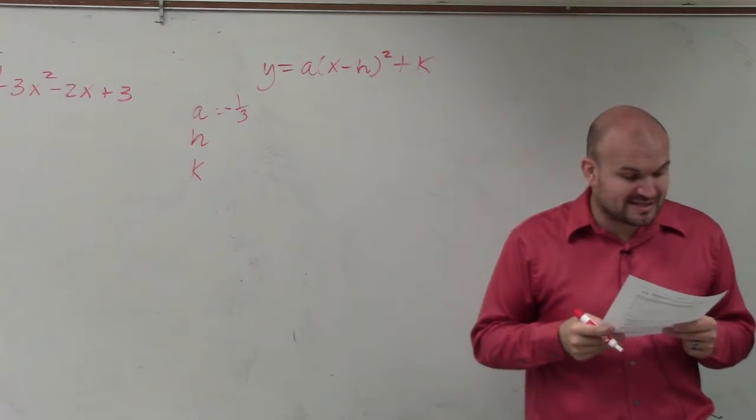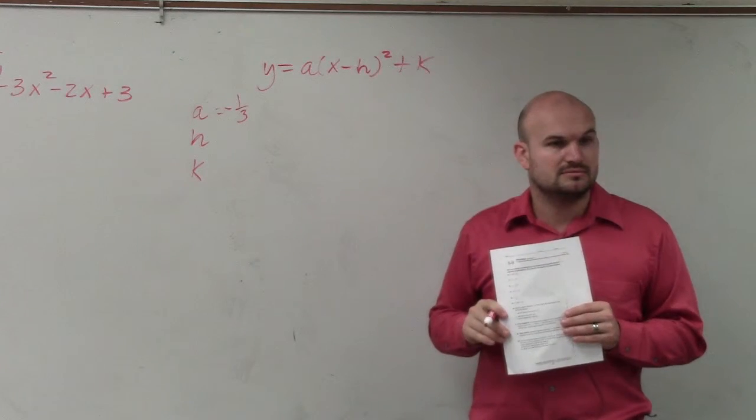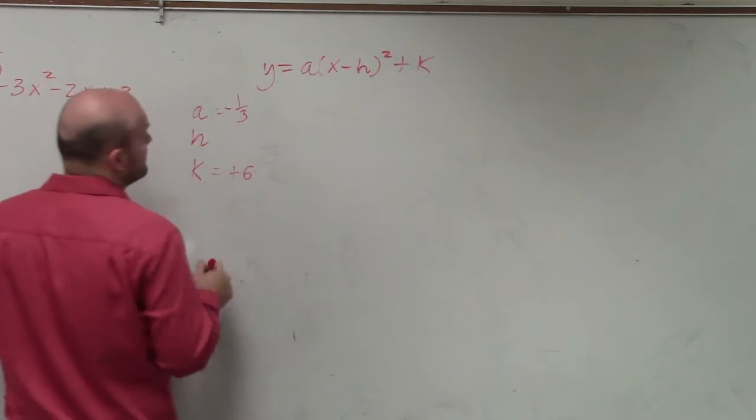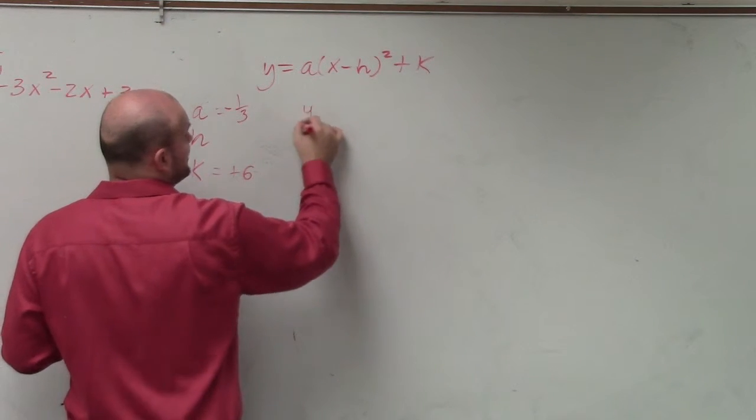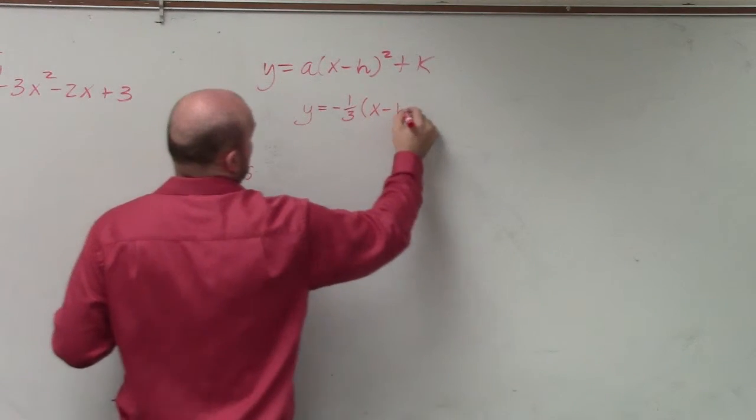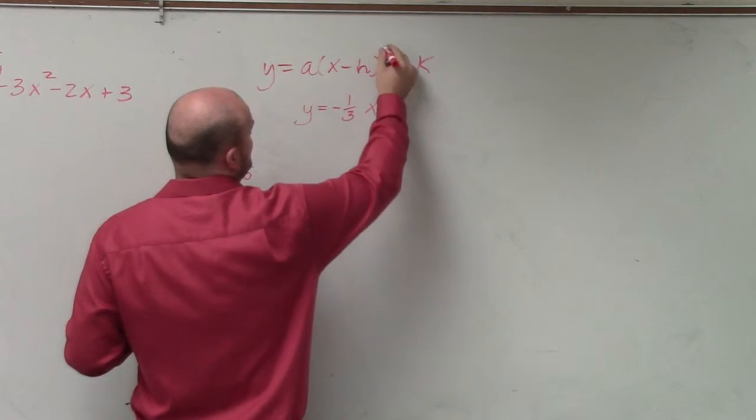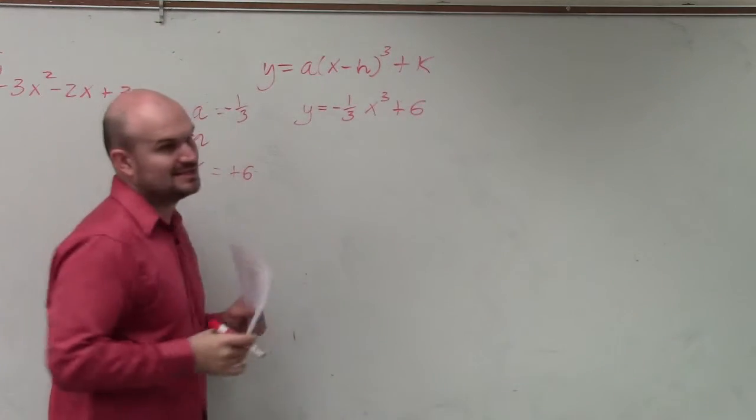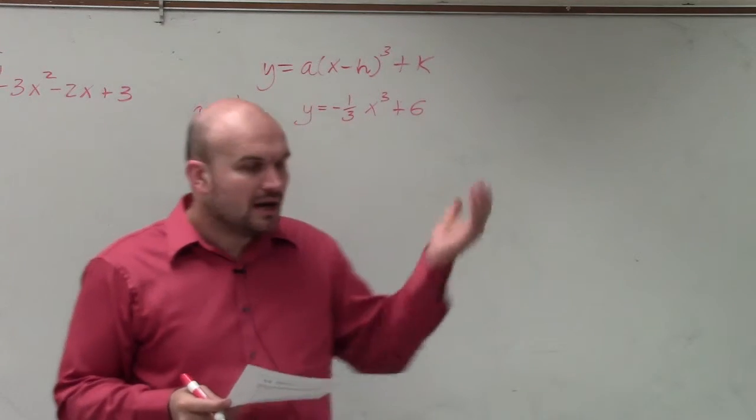And a vertical translation six units up. So which one tells us vertical translation, h or k? K. So k is a positive six. So if it was a reflection of the x-axis, it would look like this. That's cubed, by the way. Does that make sense?